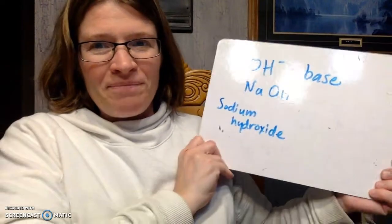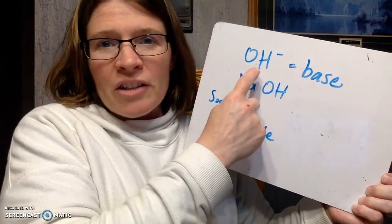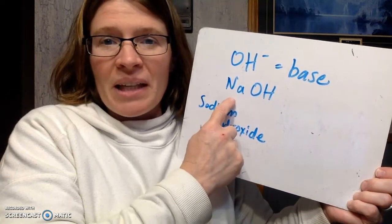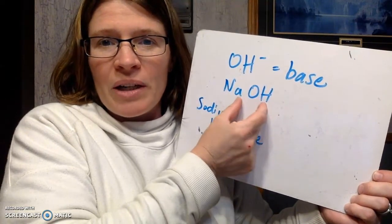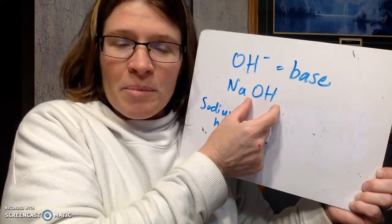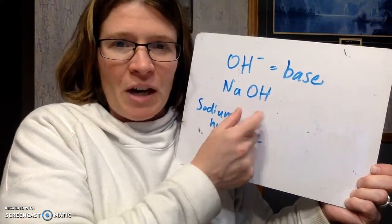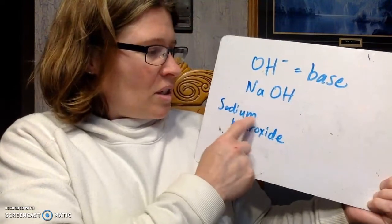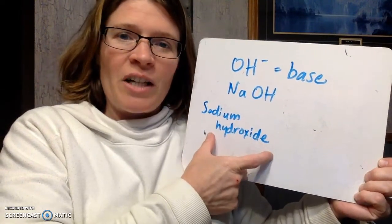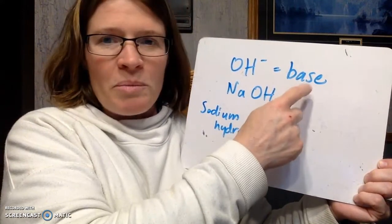On the base side, bases end in OH, the hydroxide ion. An example might be NaOH — you see the OH ion on the end of the formula, you'll know that it's a base. There are a few exceptions, but the name is sodium hydroxide. If you see the ending 'hydroxide,' you'll know that it is going to be a base.